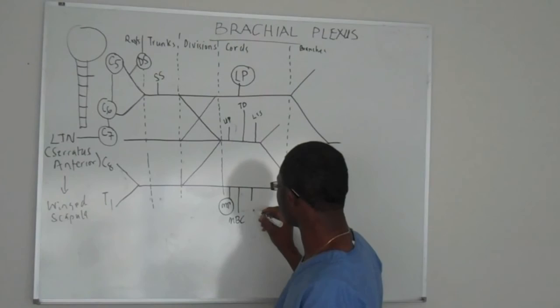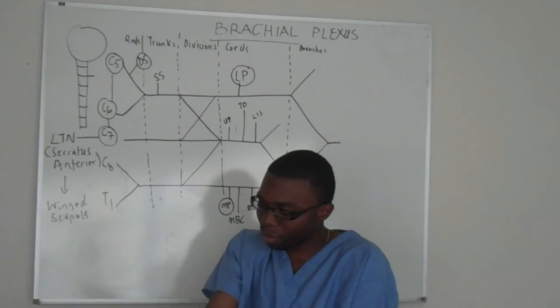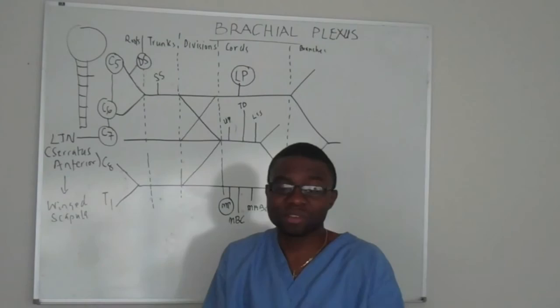And the medial antebrachial cutaneous — sounds like a long word for a nerve that just goes all the way down here and you can feel it. That's it. It just goes to your skin. So when I poke you, you're like, 'Ah, that hurts.' Yeah, that's those nerves.